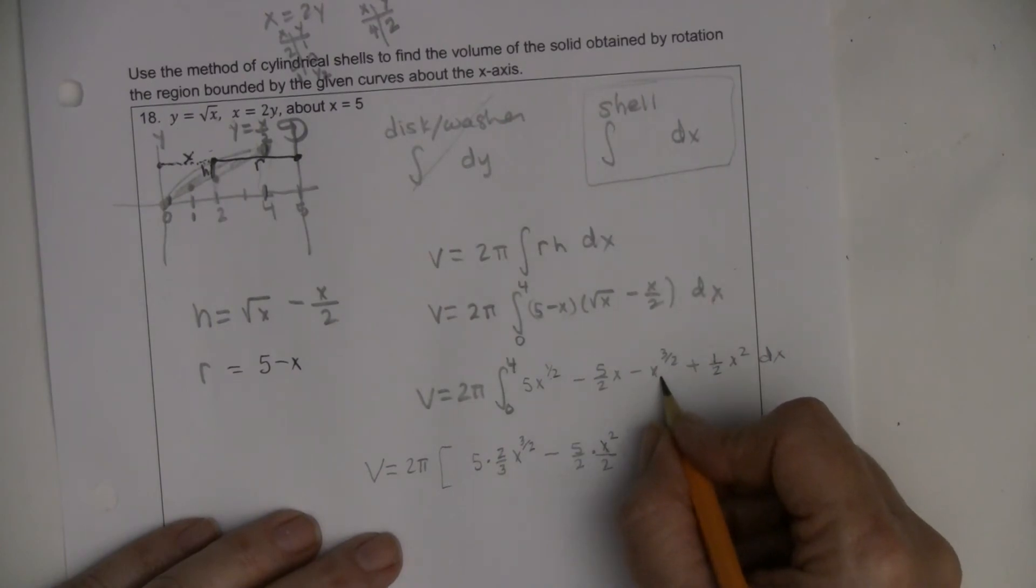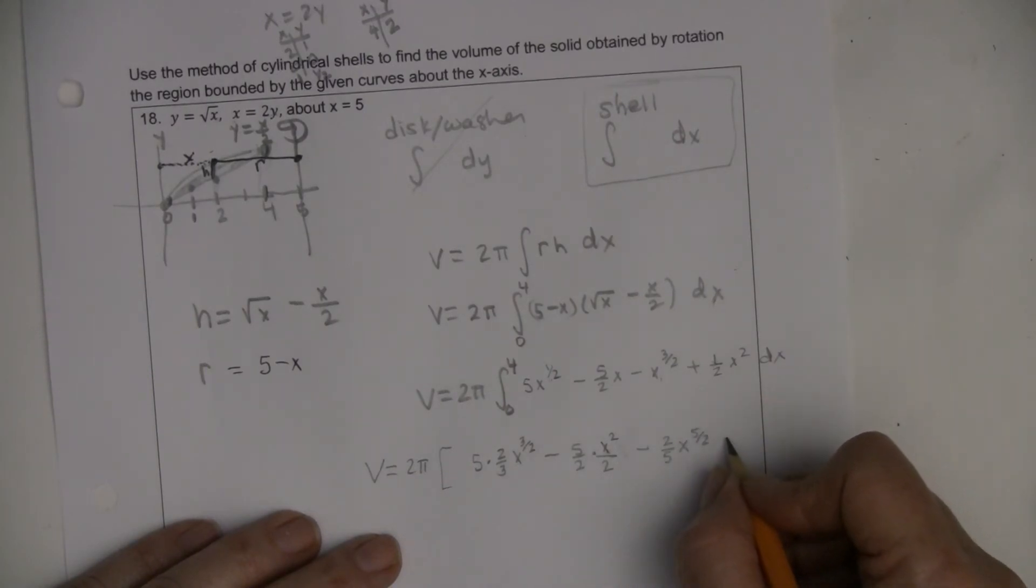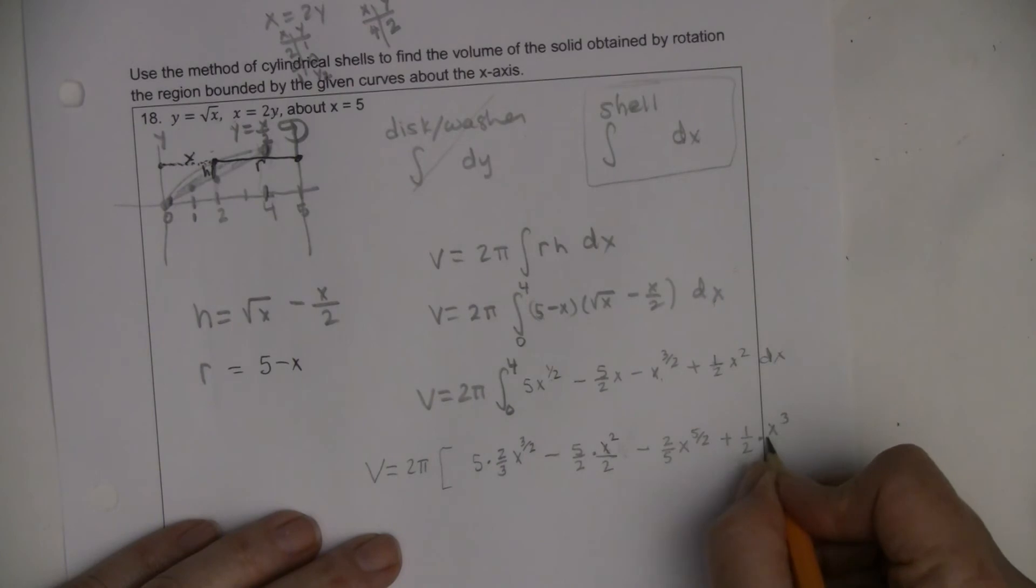And then I'm going to add 1 here, so that's 5/2. So minus x to the 5/2. When you add 1 to that and divide by the same thing, which is the same as multiplying by the reciprocal, so that times 2/5, plus 1/2, and then I'm going to write this as x to the third over 3, from 0 to 4.